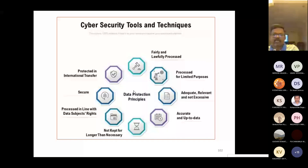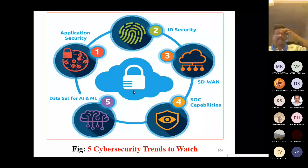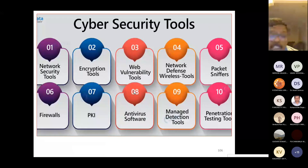Data protection principles include: secure and protected international transfer, fairly and lawfully processed data, and processing for limited purposes. Top 10 open source cyber security tools include Metasploit, OpenVAS, Security Onion, OSSEC, and Wireshark.